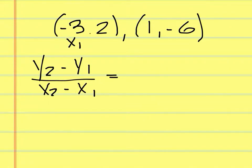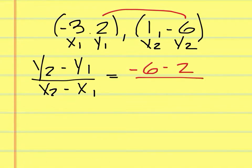This could be x1, y1, and this could be x2, y2. To find the slope, you do negative 6 minus 2 over 1 minus negative 3. That simplifies to negative 8 over 4, which is negative 2.